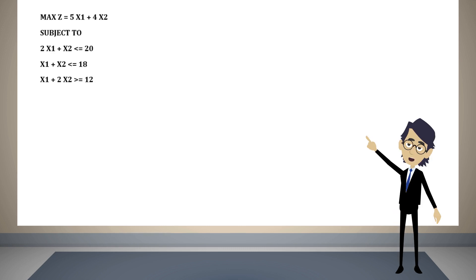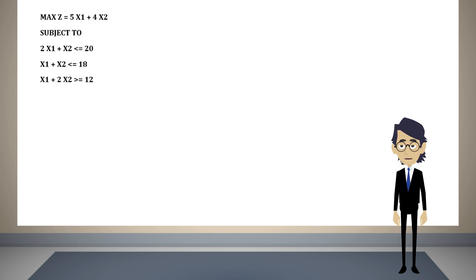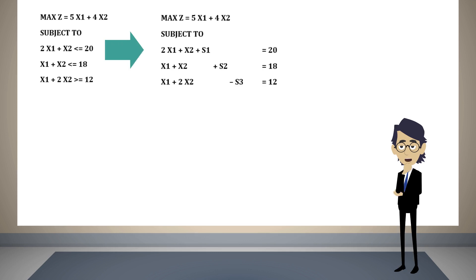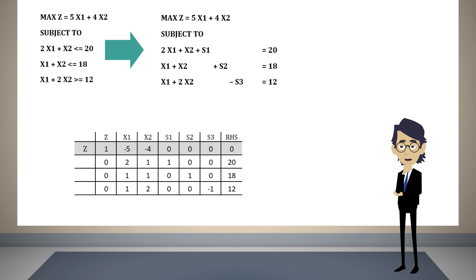Suppose we have the following problem. As commented, when we have a constraint greater than or equal to, instead of adding a slack variable we must subtract a surplus variable. In this way we arrive at the following system of equations. If we create the simplex table for this system, you will observe that s1 is basic in the first row and s2 is basic in the second row. However, there exists no basic variable for the third row, since s3's coefficient in that row is minus 1.